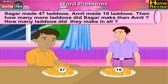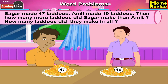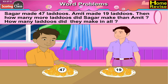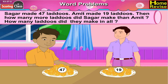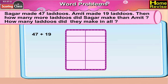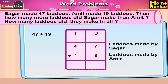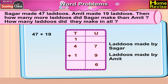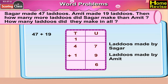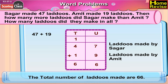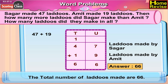Now we have to find how many laddus they made altogether. We add the laddus made by Sagar to those made by Amit. So it is 47 plus 19, that is 4 tens 7 units plus 1 ten 9 units. 7 plus 9 is 16, so we add 1 ten to the tens column. Then it is 1 ten plus 4 tens plus 1 ten, that is 6 tens. The total number of laddus is 66.